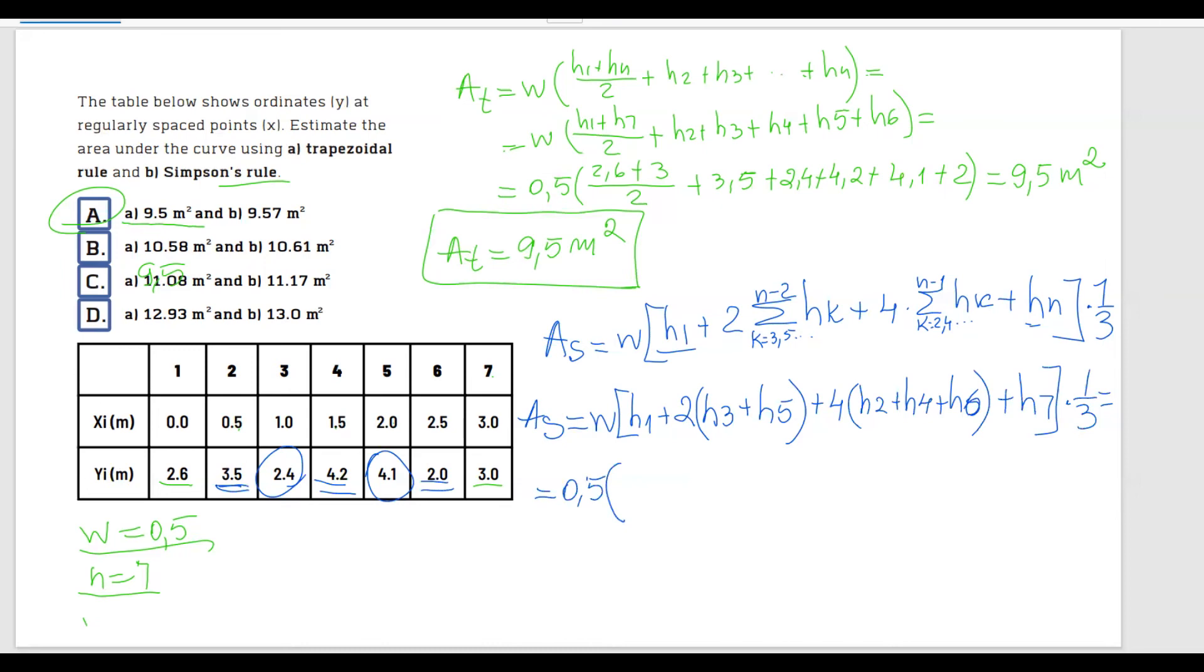And I will have, let me continue using the square parenthesis. h1 is 2.6 plus 2 multiplied by h3, gonna have 2.4 plus h5, 4.1.